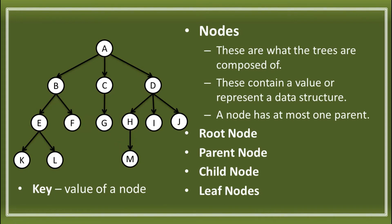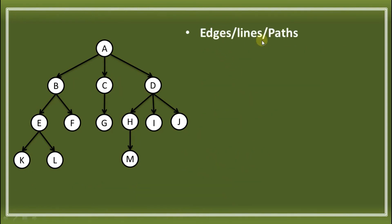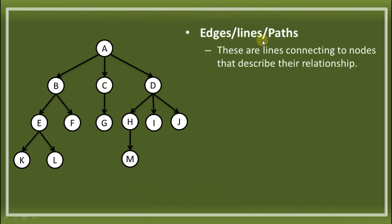If leaf nodes are the outermost nodes, we also have what are called internal nodes. These are nodes that have children — just like E, B, C, D, and A. Next, we have edges, lines, and paths. These are the lines connecting the nodes that describe their relationships.